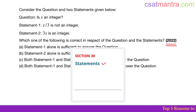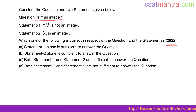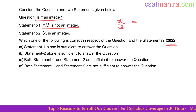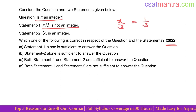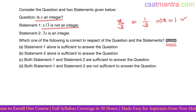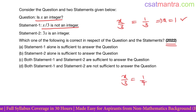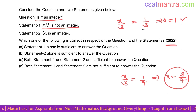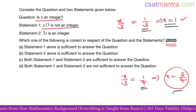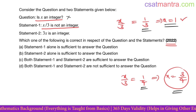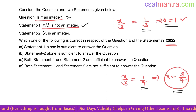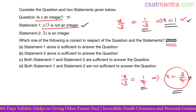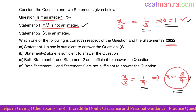2022 question: is x an integer? Statement 1: x/3 is not an integer. Let's take x=1, then x/3=1/3, which is not an integer — so x is an integer here. If we take x/3=1/4, then x=3/4, which is not an integer. So with Statement 1, sometimes x is an integer and sometimes not — Statement 1 is not sufficient to answer the question.